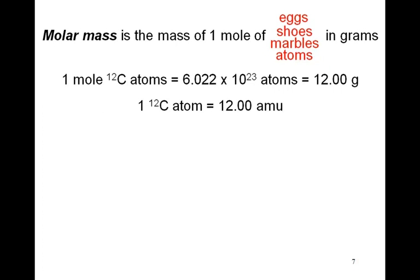One mole of carbon-12 atoms equals 6.022 times 10 to the 23rd atoms, which is equal to 12 grams. Therefore, one carbon-12 atom has a mass of 12 AMUs. Remember from your previous reading that an AMU stands for Atomic Mass Unit and is a relative mass scale, which carbon-12 was assigned the mass of 12 AMUs. And then all other isotopes can be compared to that of carbon-12 and their mass is determined.